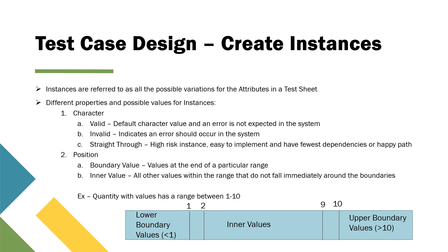The next type is invalid. This doesn't mean it's an instance that should always fail. It's an instance where it will give you an error, and it's a valid error because you have given an invalid input. That type of instance is known as the invalid character instance. Then there is the third type, which is the straight-through value for a character instance.